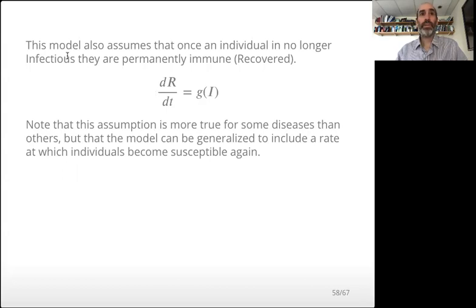At the other extreme, we can also model the number of individuals that are recovered based on a recovery rate. So the change in number of recovered with time depends on the number infected right now and the rate of their recovery. So there's some function g that describes the rate of their recovery.